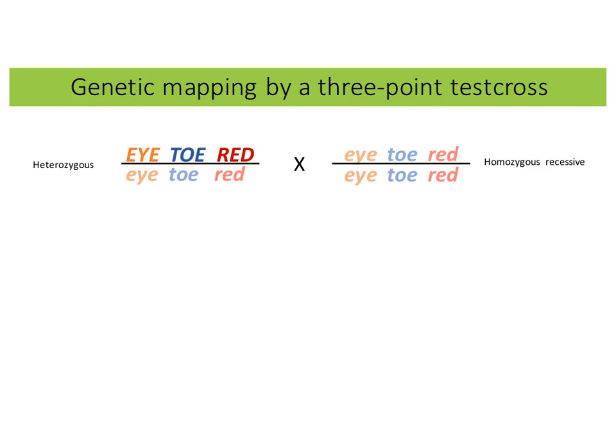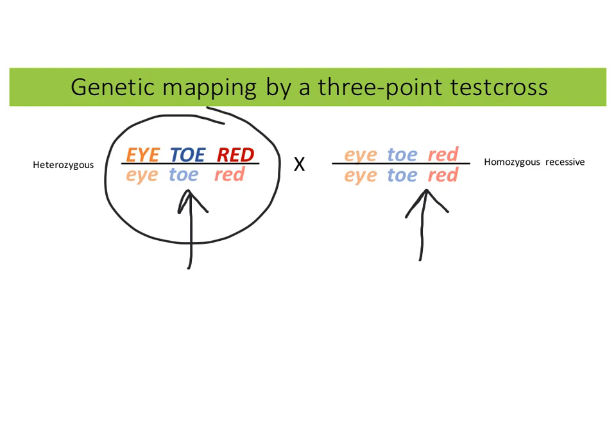In a three-point test cross, it is set up such that you cross an individual that is heterozygous for all three genes. Here on the left is an individual that is heterozygous for the I gene, the toe gene, and the red gene. And on the right, we do a test cross by crossing it to an individual that is homozygous recessive for all three genes. We also discussed that alleles can be in cis, meaning that the alleles of the similar nature are on the same homolog.